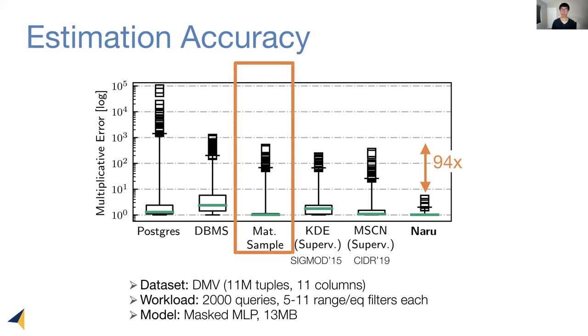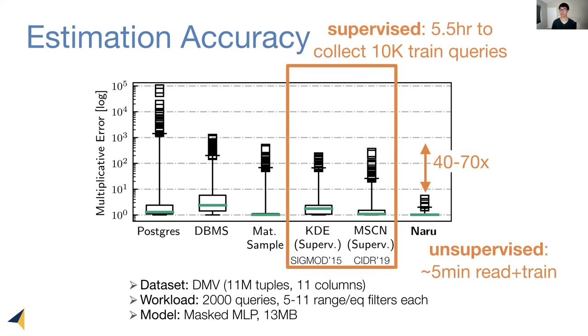Compared to a materialized sampler, Naru is up to 90x better. And we also compare to two supervised learning techniques from recent literature. Here, Naru is up to 70x more accurate. The reason is because Naru directly learns the data distribution. Therefore, it's highly robust. Supervised learning techniques may be limited by the specific set of training queries and they may not provide sufficient coverage for the data distribution. Naru is also much faster to construct.